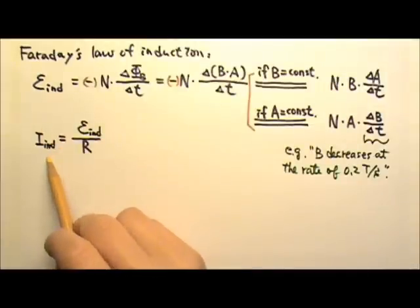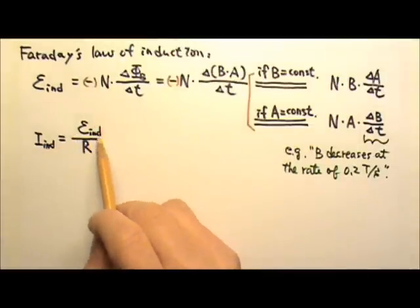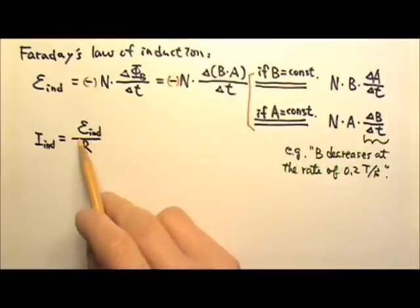And if we want to find the induced current in a wire loop, we just have to divide the induced EMF by the resistance in ohms of the wire loop.